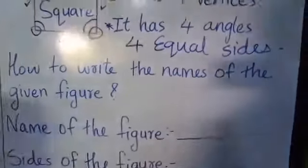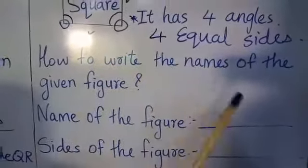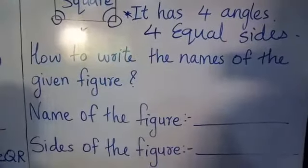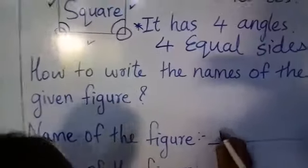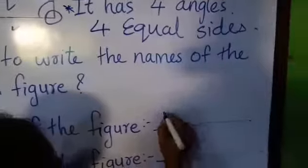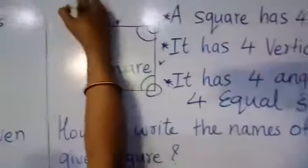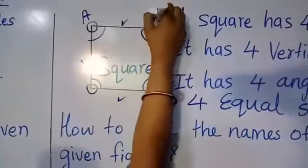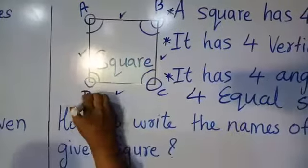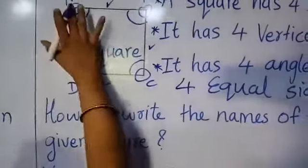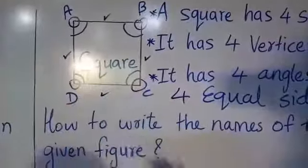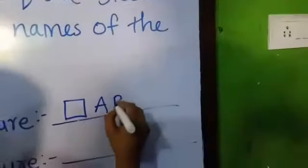Now we will see how to write the name of the given square. I will draw a square and give it the name A, B, C, D. So the name of the figure is ABCD.